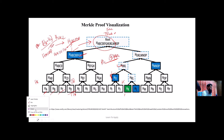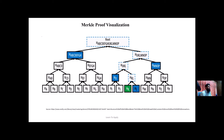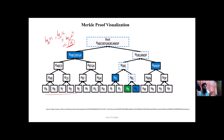If you have N transactions, for the proof you require only log of N elements. With 16 transactions that equals log base 2 of 16, which is 4 — you need only four elements to verify whether a transaction is present or not. Instead of moving a huge dataset, you only need a small amount of data. This is why light clients using Simplified Payment Verification (SPV) can create transactions without downloading the whole Bitcoin data — they only keep headers and ask full nodes for Merkle proofs.